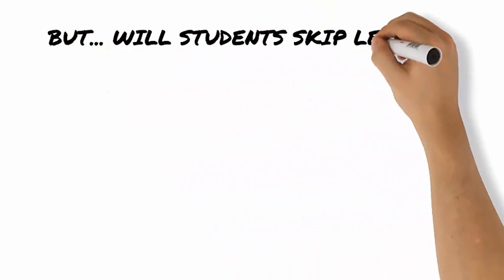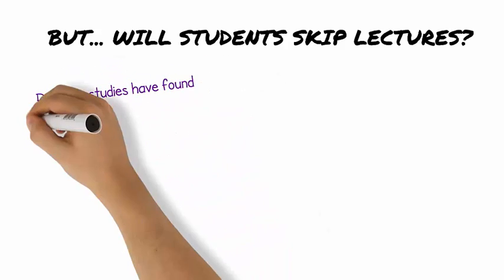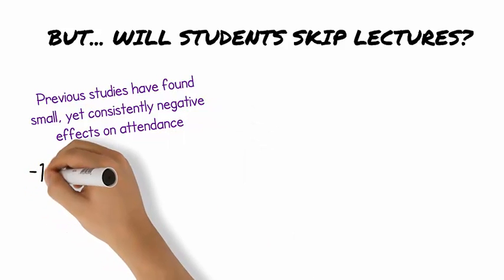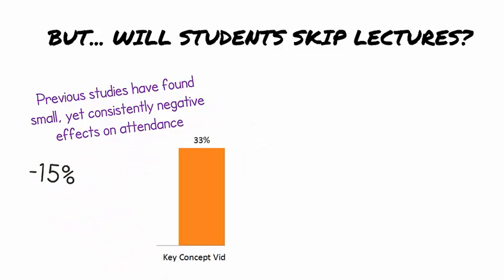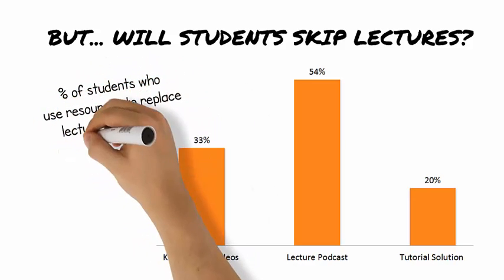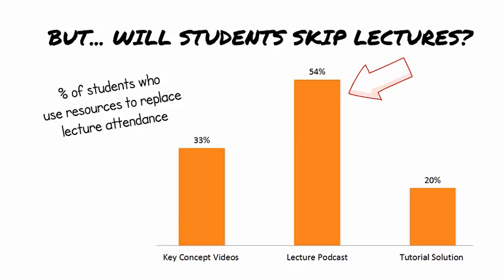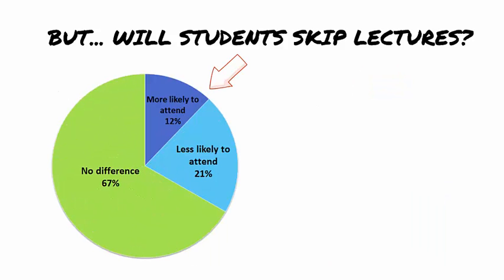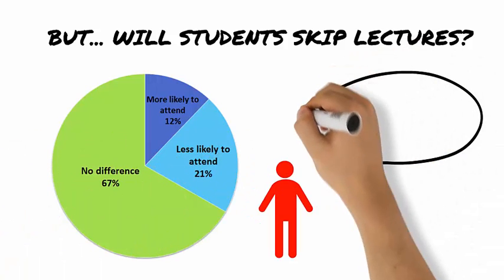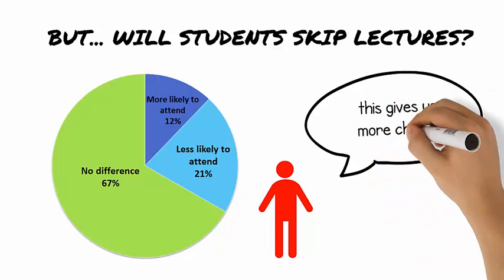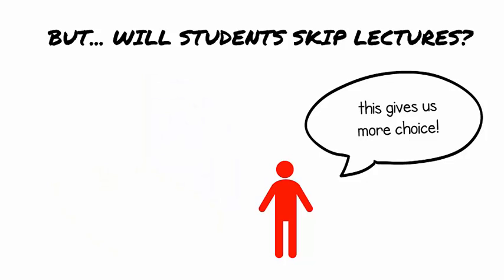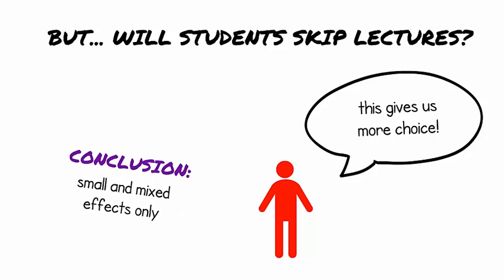You might ask: if rich media resources are so good, doesn't that mean students will skip lectures? Reductions in attendance of around 15% seem typical. Rich media resources, particularly lecture podcasts, were used by 54% of students to compensate for missed lectures. That some students are more likely to attend lectures and some less likely as a result of media-rich materials being available suggests that this allows students to approach topics using a blend of material of their choosing. So, while the majority of students use podcasts to catch up on missed lectures, the availability of these resources has only a small and mixed effect on attendance.